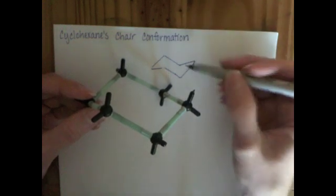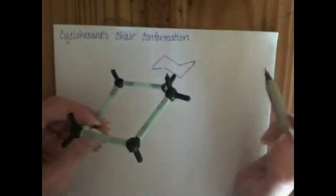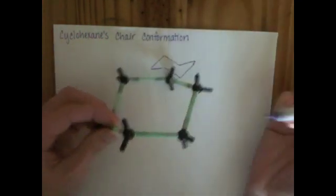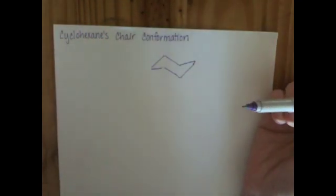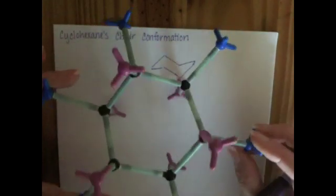When the cyclohexane is in this particular conformation, the chair conformation, the substituents or the hydrogen atoms that are on the ring take on this really interesting pattern. So you can look at this cyclohexane, which has got a whole bunch of stuff attached to it to help you visualize it.